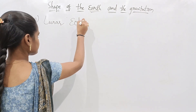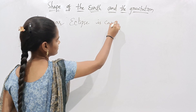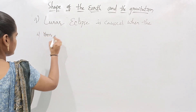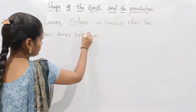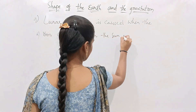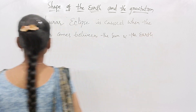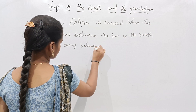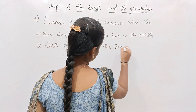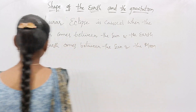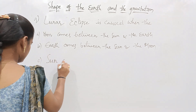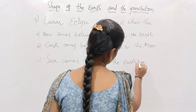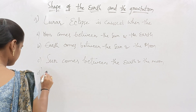The ninth question is: a lunar eclipse is caused when — Option A: the moon comes between the sun and the earth; Option B: the earth comes between the sun and the moon; Option C: the sun comes between the earth and the moon; Option D: none.